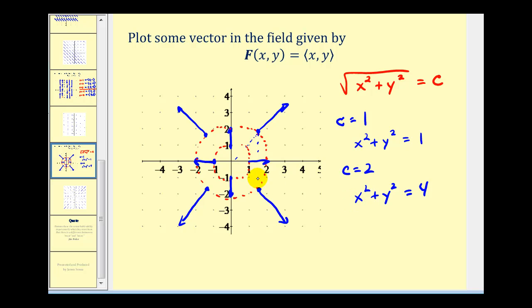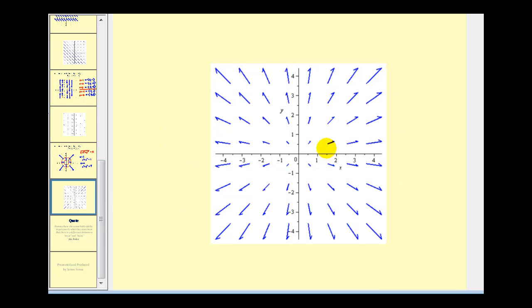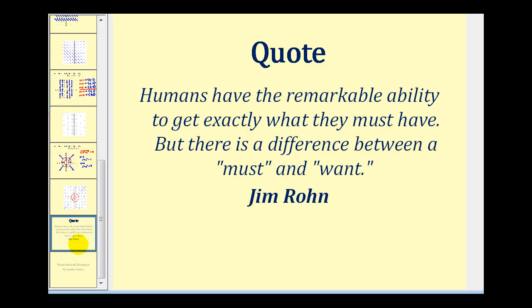We stop here and look at the computer-generated version of this vector field. You can see that if we sketch the level curves, vectors with the same magnitude have their initial points on a circle centered at the origin. I hope you found this introduction helpful — thank you for watching.